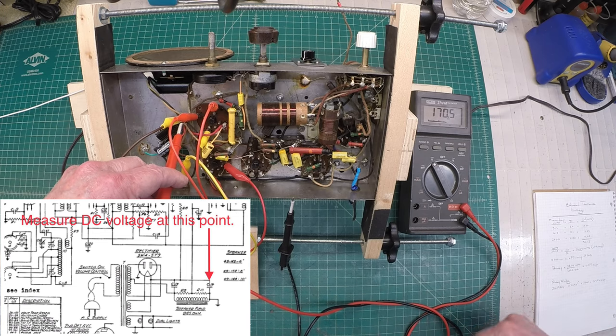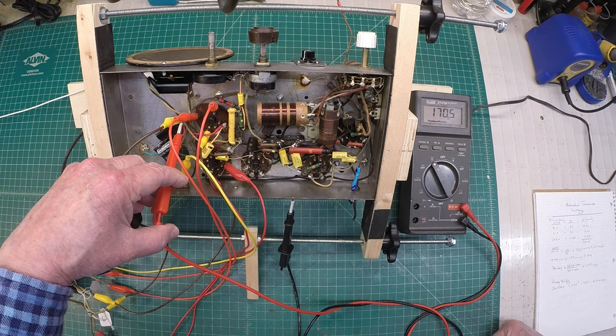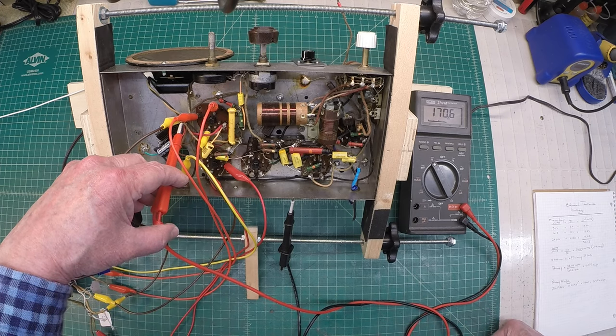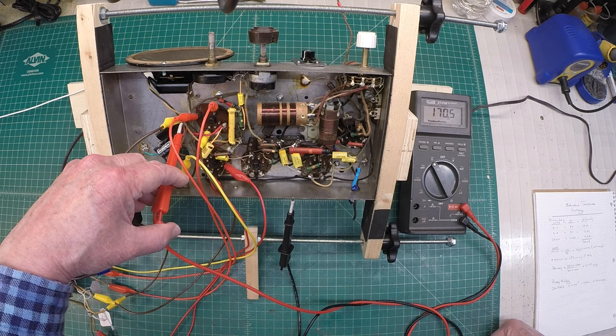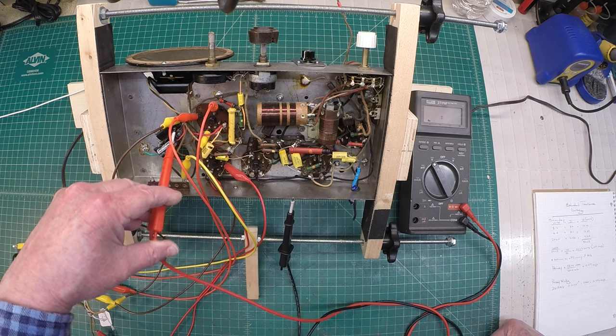And you can see with the voltage drop from the rectifier itself, that being the efficiency of the rectifier, the fuel coil, and all the other DC resistance, we're about 171 volts or so DC on the B-plus side.